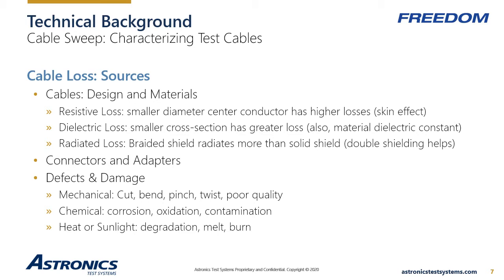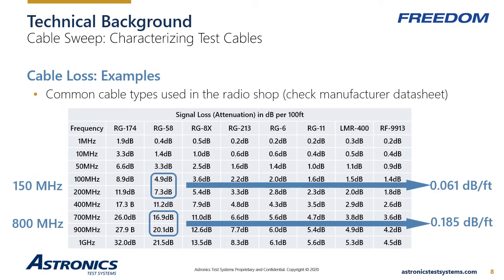Coaxial cables have a minimum bend radius which increases with the size and stiffness of the cable. Bending the cable beyond this limit will permanently damage the cable and add loss. Cables can also be mechanically damaged by cutting, pinching, and twisting. Cables exposed to harsh atmospheric conditions can be damaged by humidity, rain, heat, or sunlight. To demonstrate these principles, consider the following chart showing commonly used cables and cable types for testing equipment in the two-way radio industry.